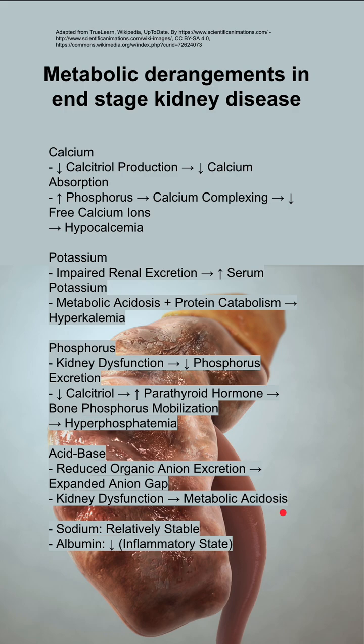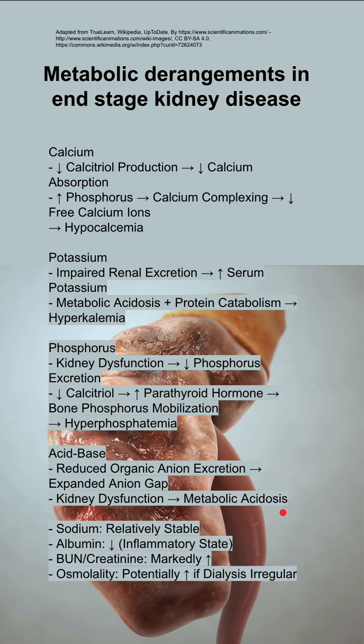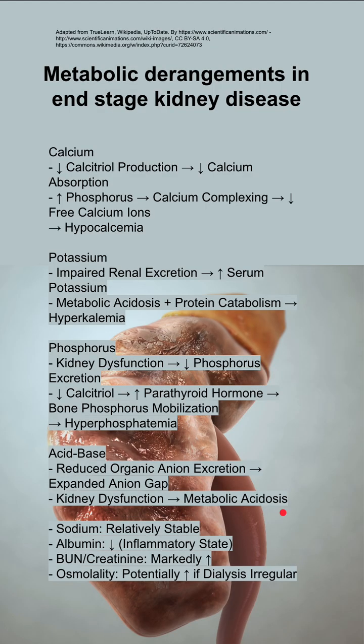Your sodium is relatively stable in end-stage kidney disease. Albumin tends to be decreased because you're in an inflammatory state, and your BUN and creatinine are markedly increased. Your osmolality can potentially be increased if your dialysis is irregular.